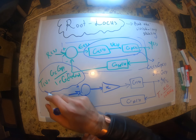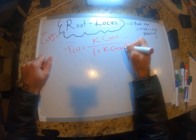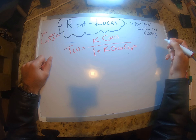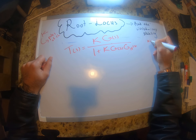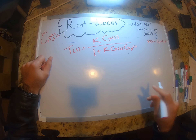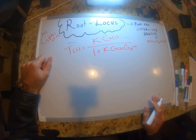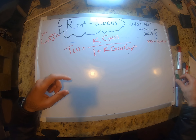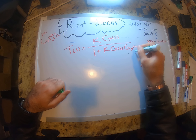Let's write the transfer function T(s) equals K times G(s) divided by one plus K·G(s)·GH(s). And again, K·G(s) is basically Gc(s) times Gp(s).